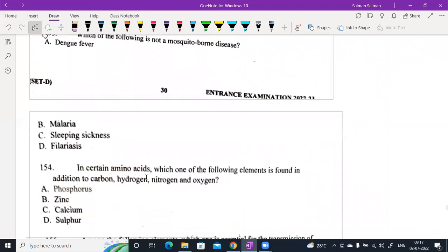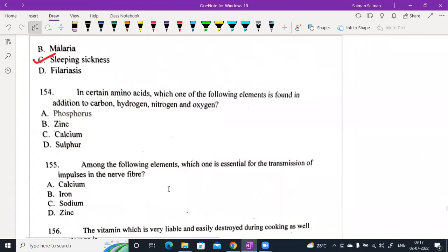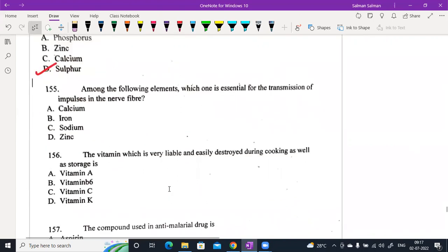Not a mosquito-borne disease would be sleeping sickness. In certain amino acids, which of the following element is found in addition to carbon, hydrogen, nitrogen and oxygen? It is sulfur. Which one is essential for transmission of impulses in the nerve? It is sodium, which is required.